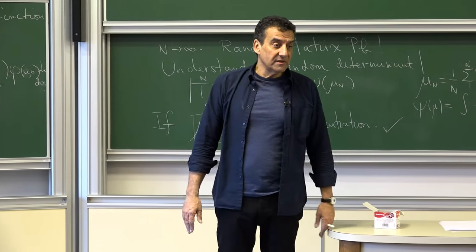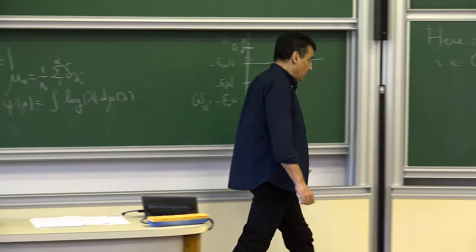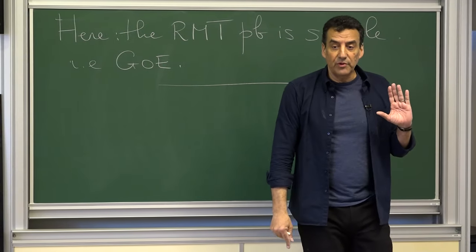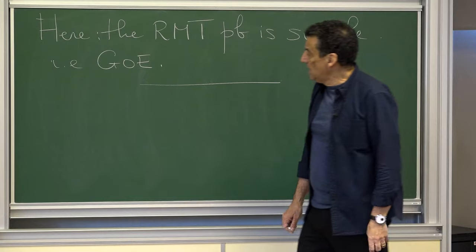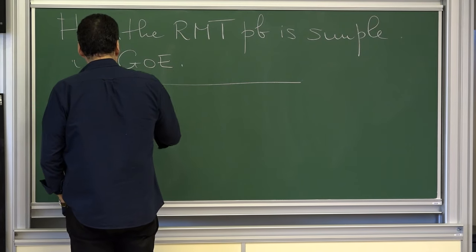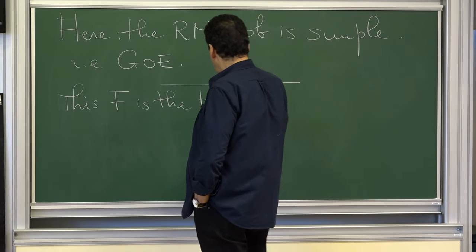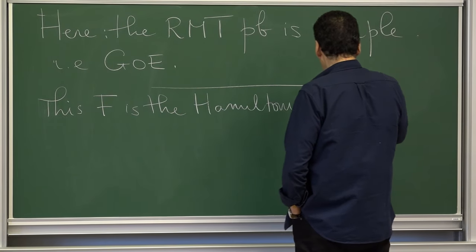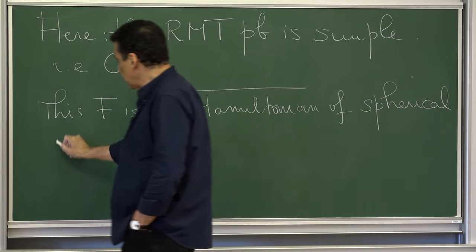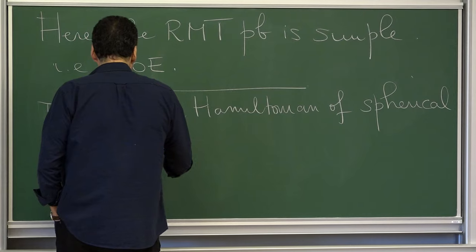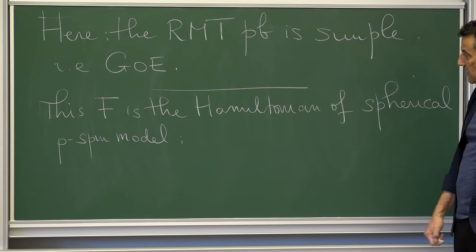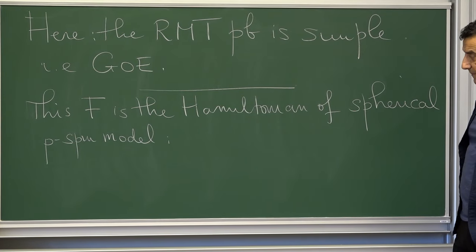So with this story: you take a random polynomial of degree P ≥ 3, and the landscape is terribly complex. Now, why was this interesting? This model has a name in physics. This F is the Hamiltonian — the energy function — of what is called the spherical p-spin model, which has been studied at length by physicists: Parisi, Mézard, Cugliandolo, Crisanti, Sommers, and many others.